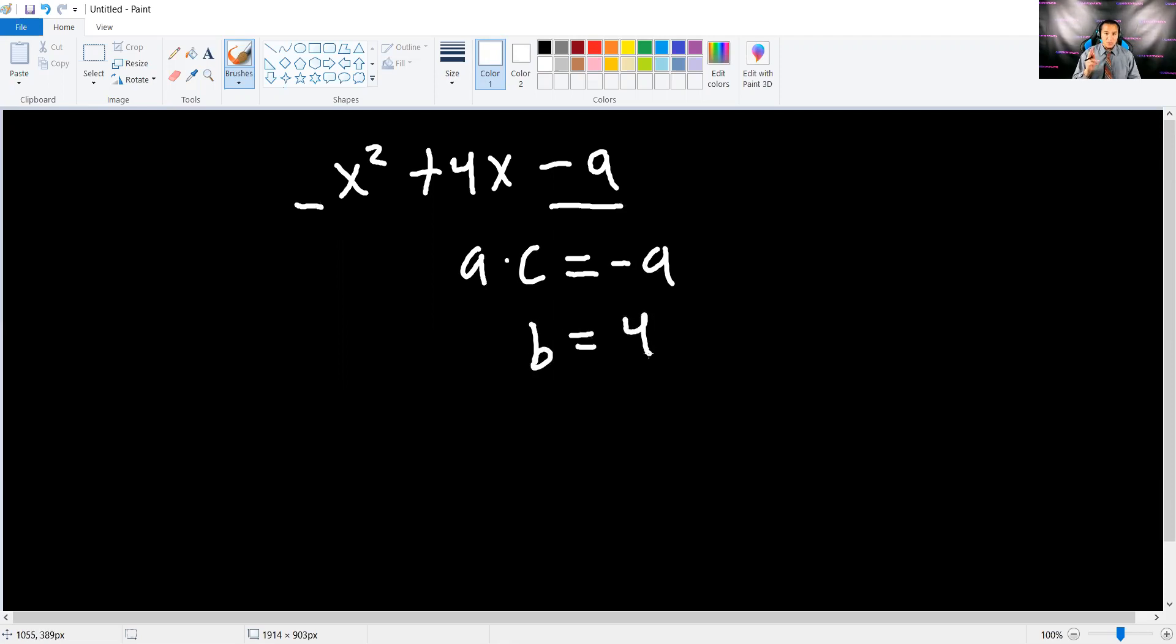B is 4. Now, you have to find two numbers that add up to 4 and they multiply to negative 9. So, for example, 3 times negative 3. That will multiply to negative 9, but it won't add up to 4, right? In fact, you can't find any number that does. So this is when you complete the square.